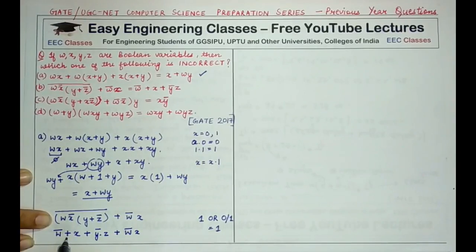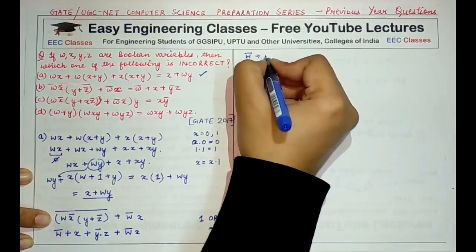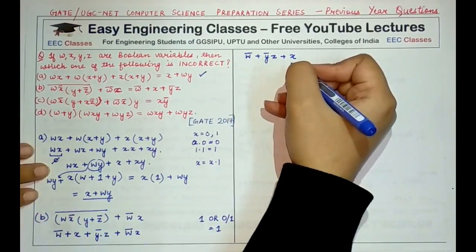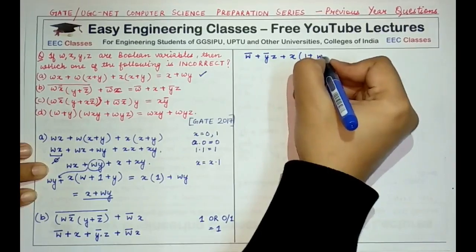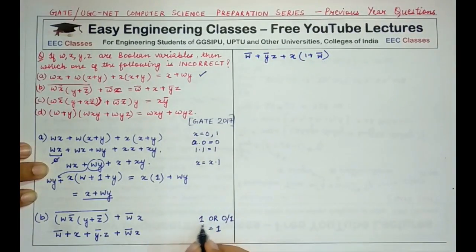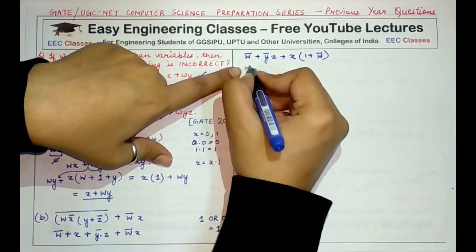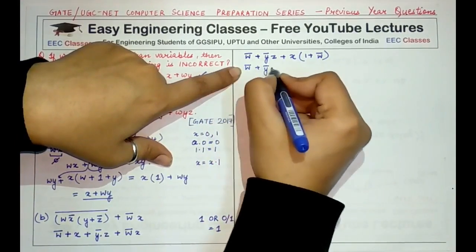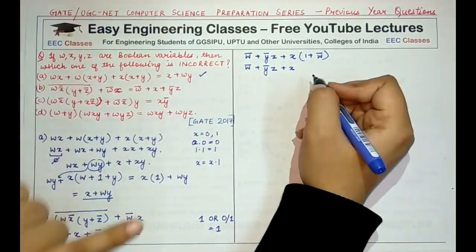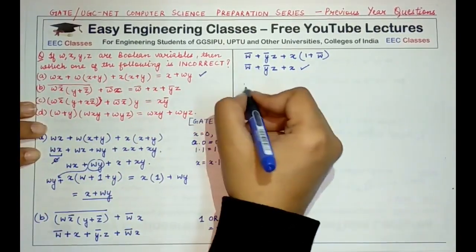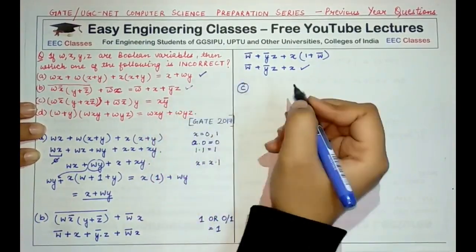We have: w̄ + x + ȳz + w̄x. Taking x common from x and w̄x gives x·(1 + w̄) = x·1 = x. Using the property that OR with 1 gives 1, this reduces to w̄ + ȳz + x. The right hand side is w̄ + ȳz + x, so option B is also correct.